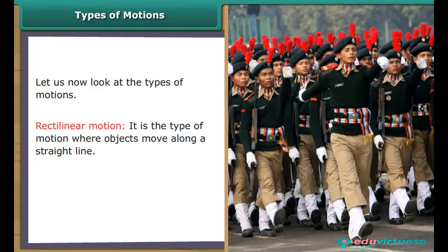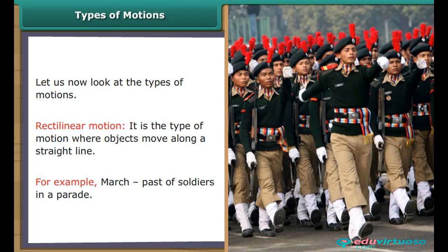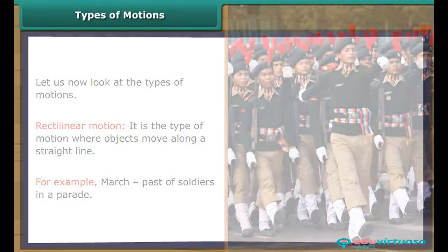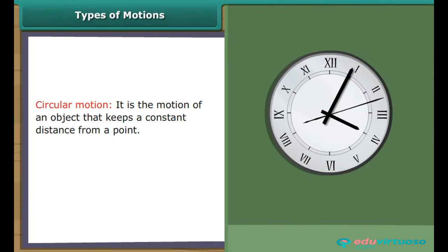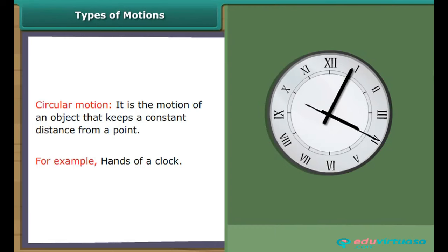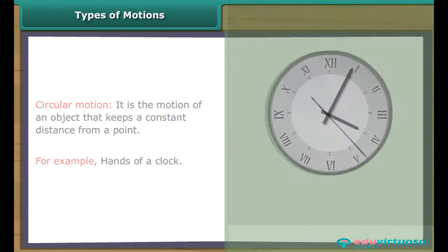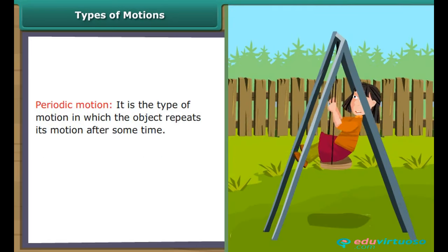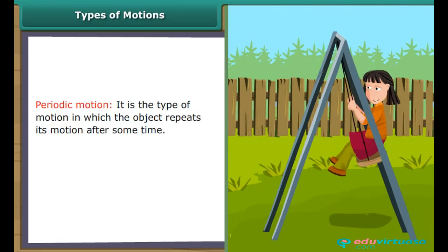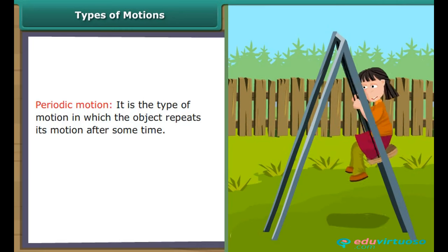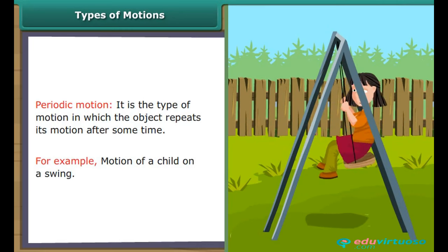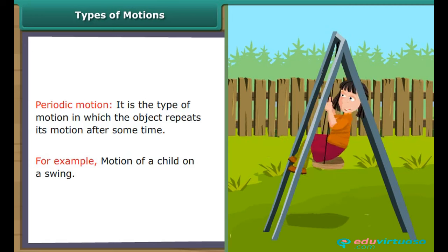Let us look at the types of motions. Rectilinear motion is the type of motion in which objects move along a straight line. Periodic motion is the type of motion in which the object repeats its motion after some time. For example, the motion of a child on a swing.